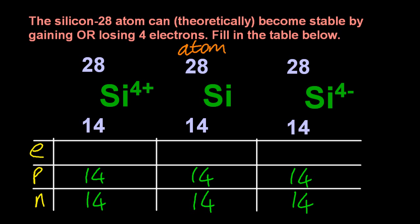Now, if it's an atom, it has a neutral charge. So no charge is written, which means the number of electrons equals the number of protons, to give it a neutral charge.